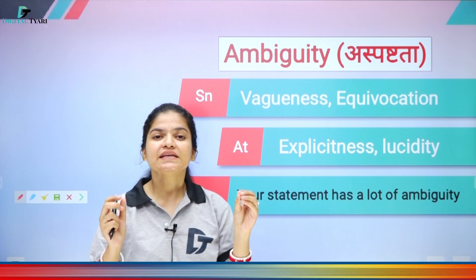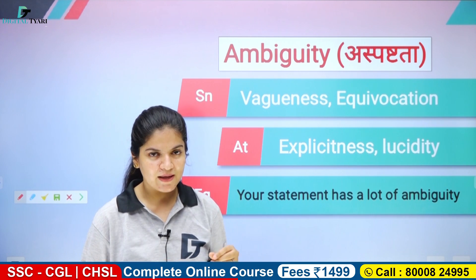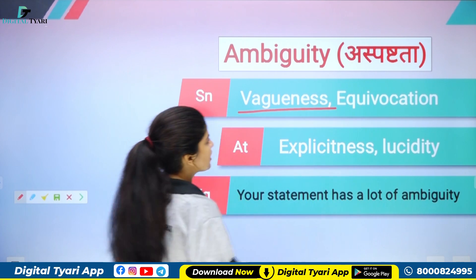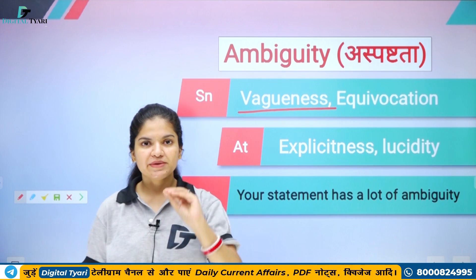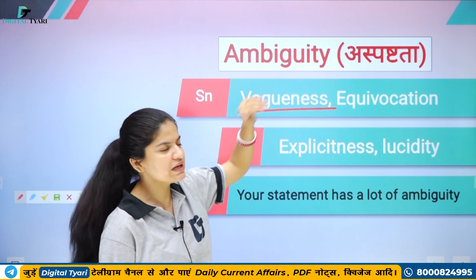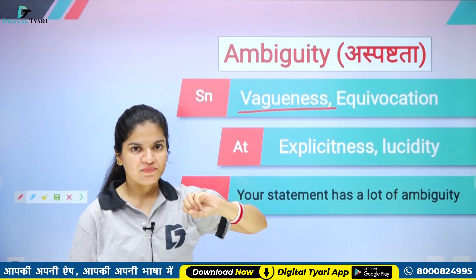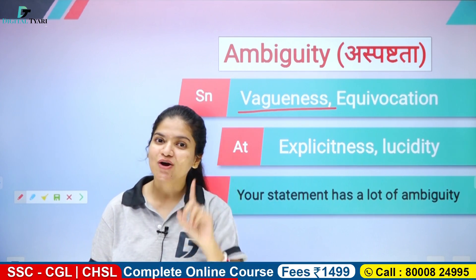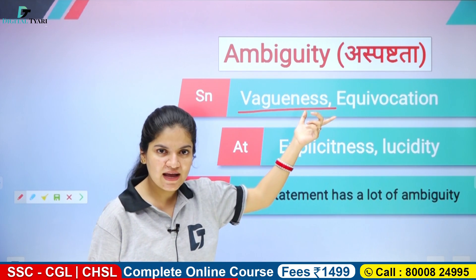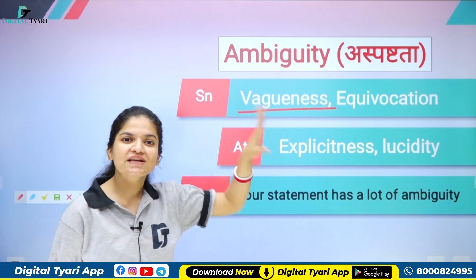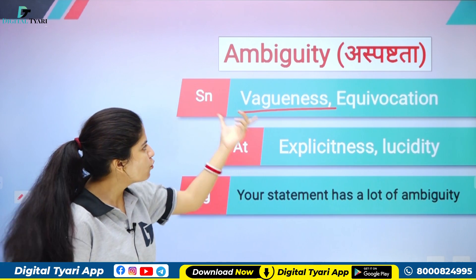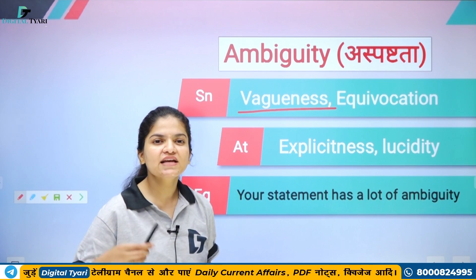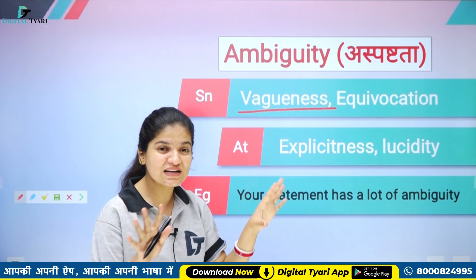Toh ambiguity ka matlab hota hai aspashtta — yani koi cheez jab clear nahi hai, spasht nahi hai. Synonyms iske ho jayenge: vagueness — yani jo clear nahi hai, dhundla keh sakte hain aap. Equivocation — jo bolta na, equivocal word bahut baar use hua hai, jo baat kar raha hai uske kai matlab nikal rahe hain, ek baat nahi kar raha, spasht nahi hai — toh equivocation, again aspashtta hoga. Toh ambiguity, vagueness, unclearness, equivocation — ye ek jaise words hain.